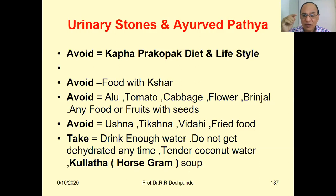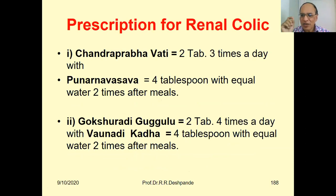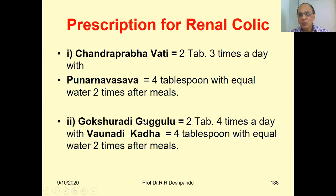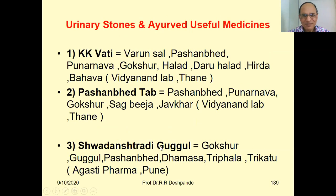To dissolve stones, kulatha (horse gram) soup is highly recommended — especially in the acute phase for kapha prakruti patients. A sample prescription: chandra prabha vati 2 tablets three times a day with punarnavasava 4 tsp with equal water after food; gokshuraji gugulu 2 tablets four times a day; and varunadi kadha 4 tsp with equal water after meals.